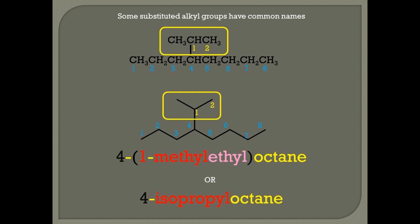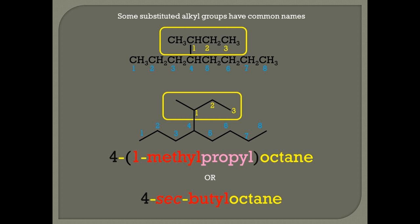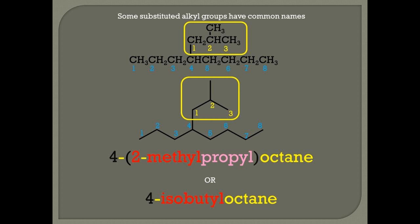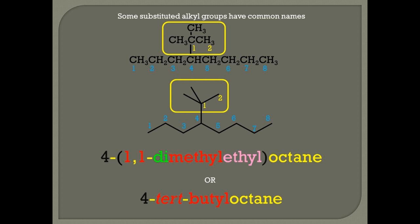Hint two. Some substituted alkyl groups have common names. For example, 1-methylethyl is also known as isopropyl. 1-methylpropyl is known as sec-butyl. 2-methylpropyl is isobutyl. And 1,1-dimethylethyl is known as tert-butyl.